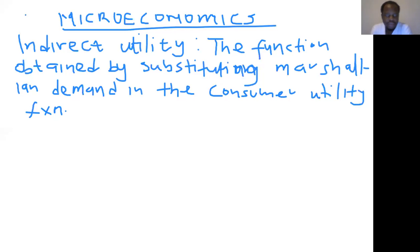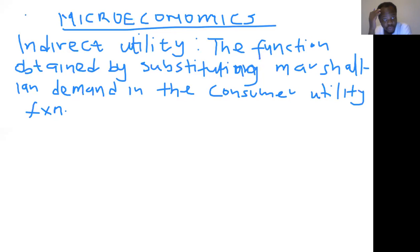Good morning, everyone. Today we are going to look at our discussion session 2. In the first discussion, we were given the direct utility function and we were able to derive our Marshallian demand function from it. Now what we are going to do today is to also derive our indirect utility function.